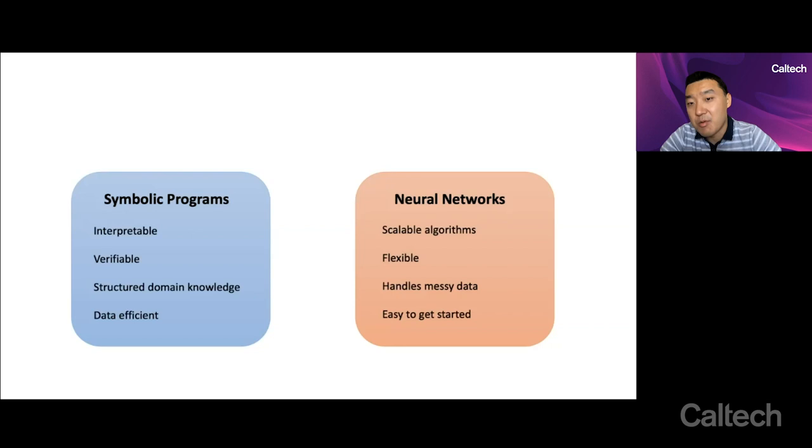On the other hand, we have neural networks or deep learning. One of their main benefits is that they have very scalable algorithms based on continuous optimization approaches such as stochastic gradient descent. They're extremely flexible and can fit very complex phenomena that symbolic programs have a hard time fitting. They can handle really messy data, such as noisy images. And they're very easy to get started with because of all the software support and the ease of just setting a neural network on a large data set and getting something that does something non-trivial.